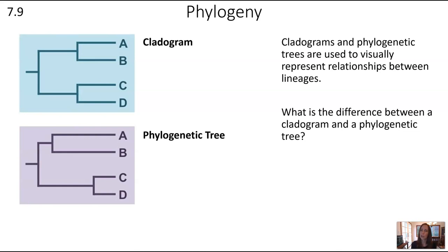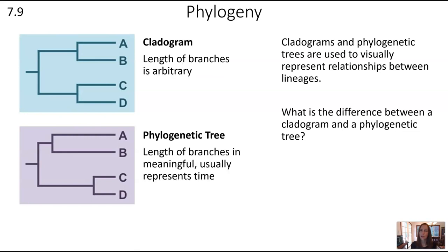On the top you'll see a cladogram; on the bottom left, a phylogenetic tree. In a cladogram, the length of the branches is arbitrary, whereas in a phylogenetic tree the length of the branches has meaning — usually corresponding to a certain amount of time. On the phylogenetic tree on the bottom left, you can see that the common ancestor of C and D was more recent than the common ancestor of A and B, whereas that type of information is not captured in a cladogram.